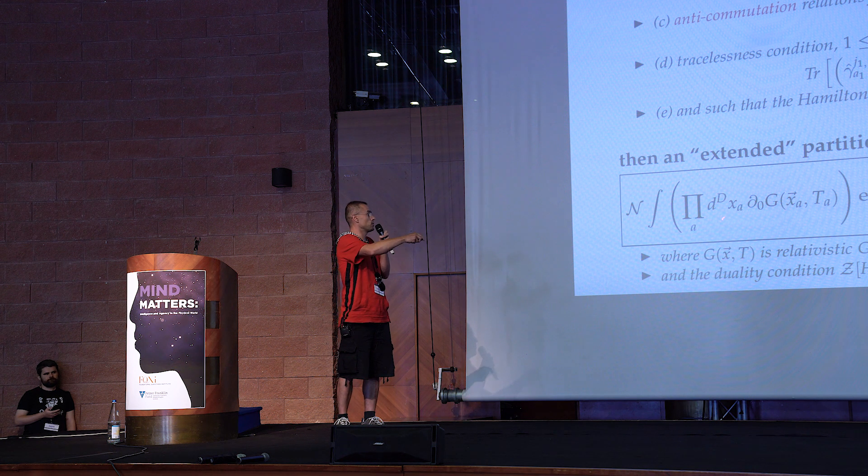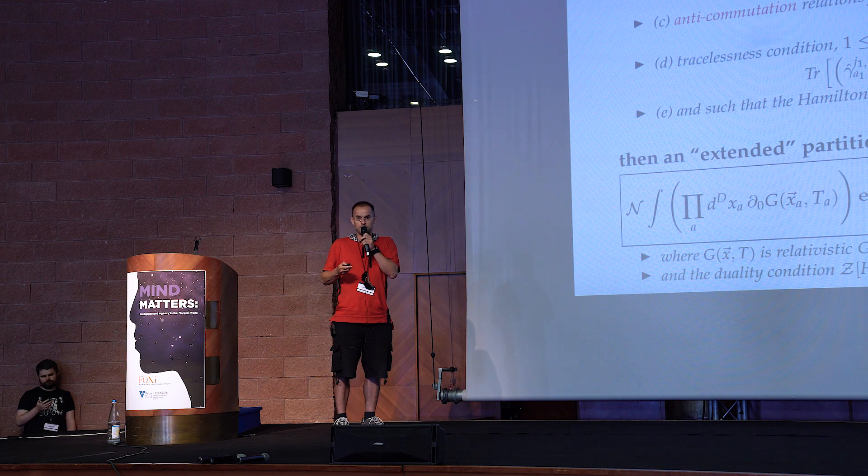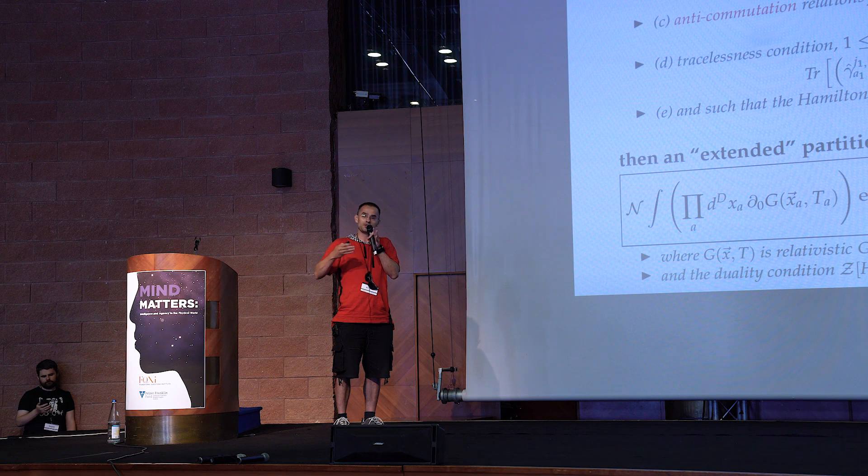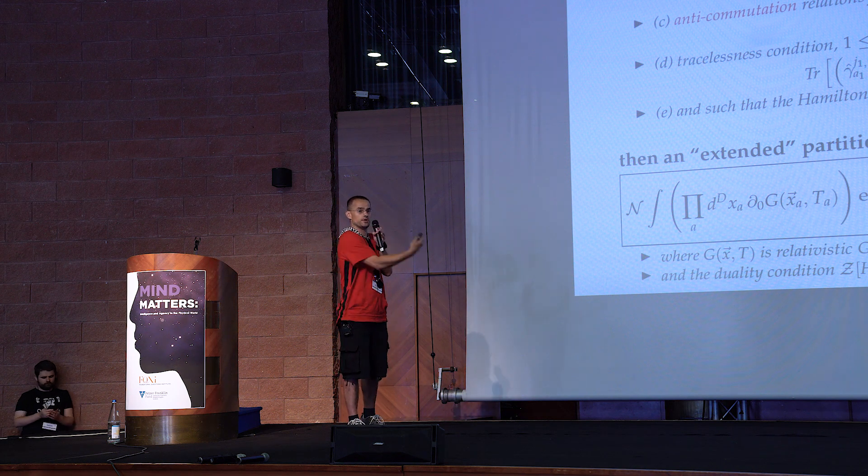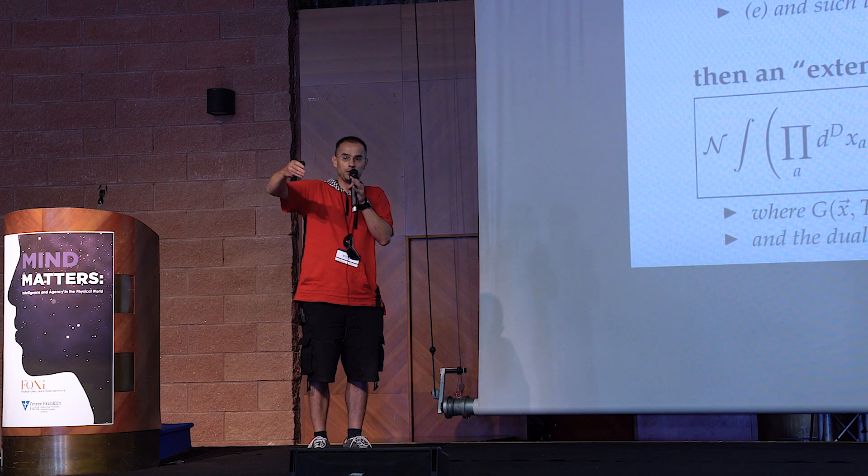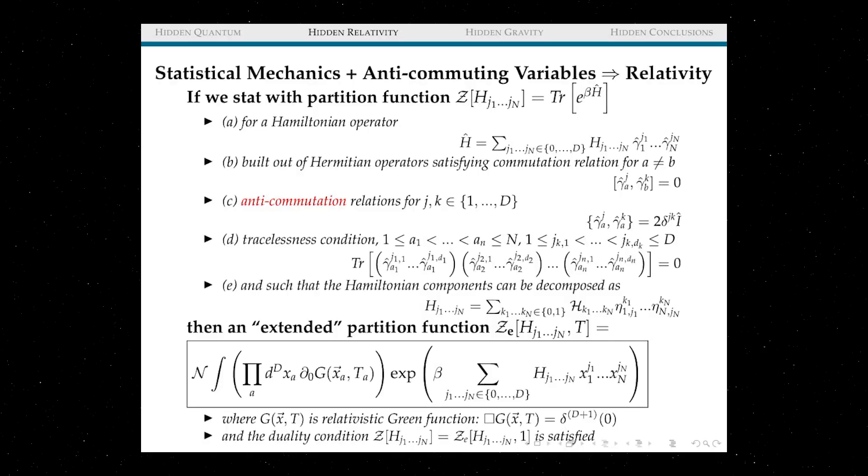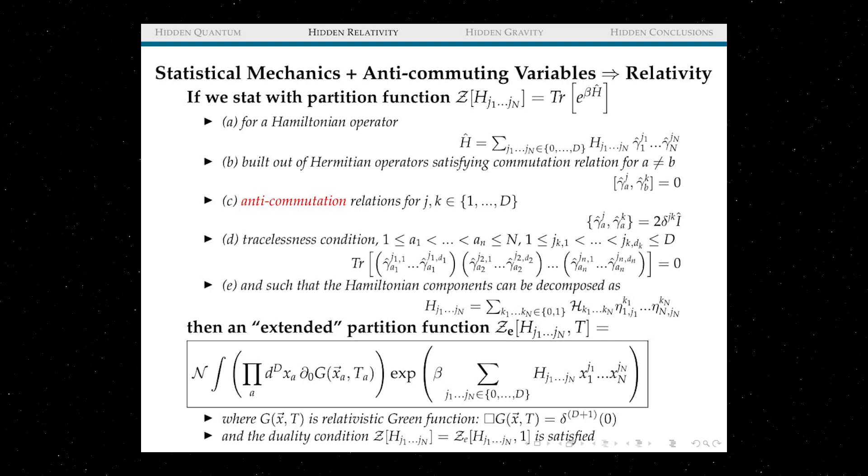So similar to what AdS/CFT people do, however their partition function sitting on the boundary and then the relativistic stuff sitting in the bulk in between. So this is the second result that tells us that this may be the way our relativity can emerge, because after all those functions are the same.